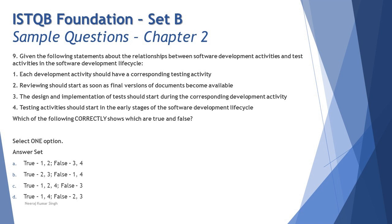Statement three says: test design and implementation of tests should start during the corresponding development activity. The right answer is that it should be analysis and design, not implementation. Implementation happens post that because it requires creation of the test environment, prioritization of test cases, setting up traceability, automation, and many other things — so it cannot happen in parallel with the development activity. Therefore statement three is also wrong.